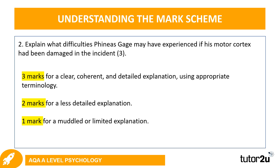For question two — explain what difficulties Phineas Gage may have experienced if his motor cortex had been damaged — three marks available. One mark for a muddled or limited explanation; two marks for a less detailed explanation; three marks for a clear, coherent, and detailed explanation using appropriate terminology. The key difference between three marks and one mark is that three marks requires clear, coherent, detailed use of key terminology, while one mark reflects a limited or muddled included explanation.